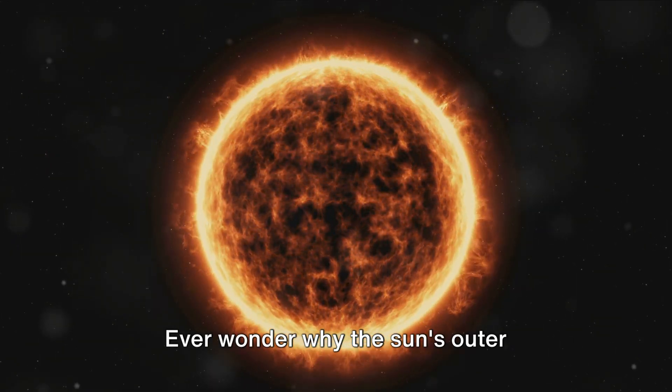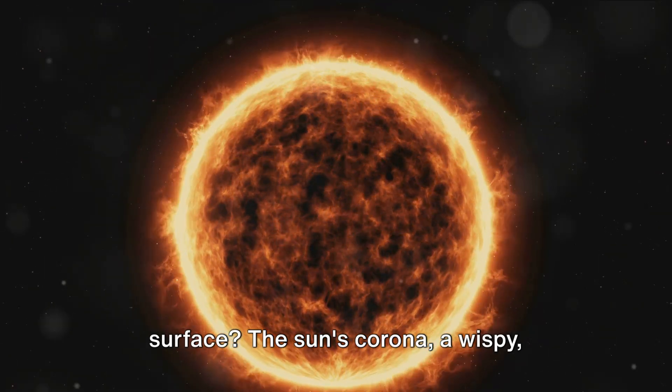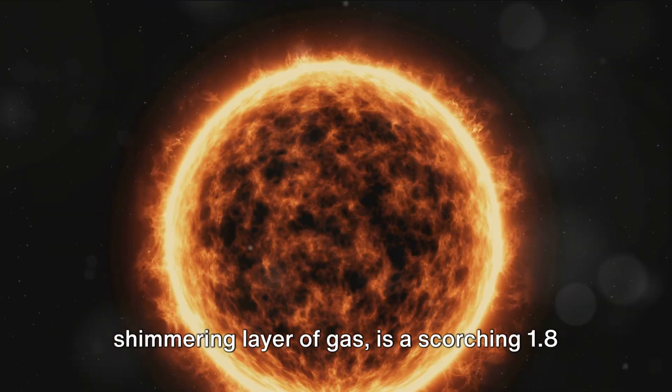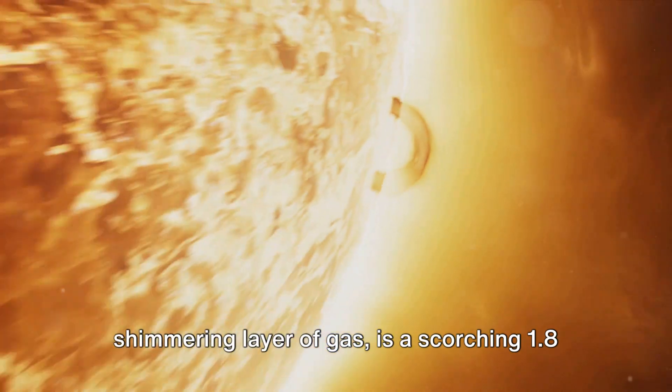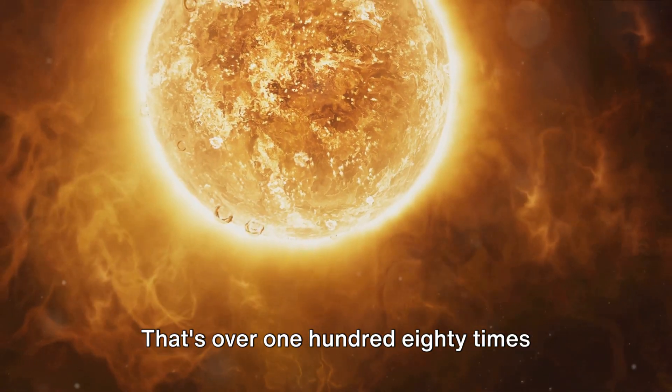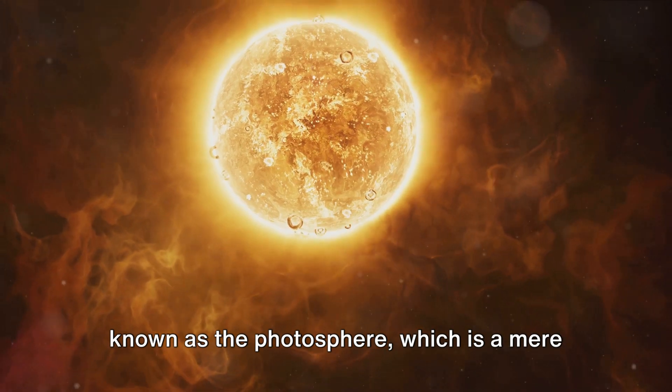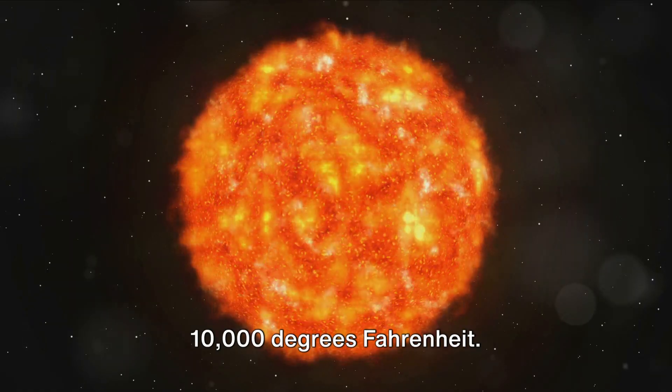Ever wonder why the Sun's outer atmosphere, the corona, is hotter than its surface? The Sun's corona, a wispy shimmering layer of gas, is a scorching 1.8 million degrees Fahrenheit. That's over 180 times hotter than the surface of the Sun, also known as the photosphere, which is a mere 10,000 degrees Fahrenheit.